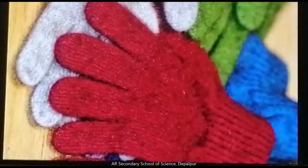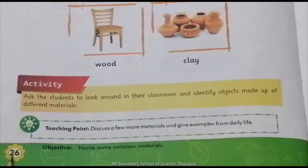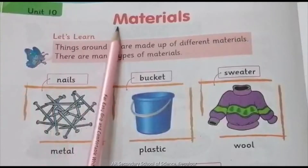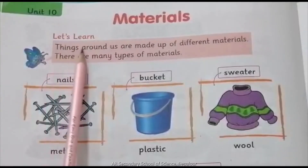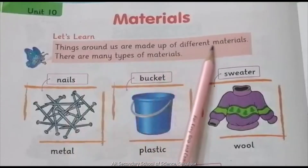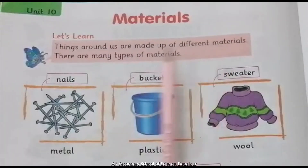Now open your science beginner book, page number 26, unit number 10: Materials. Let's learn — things around us are made up of different materials. Hamare atraaf ki cheezein mukhtalif materials se bani hain. There are many types of materials.